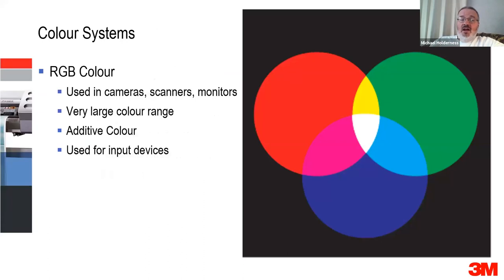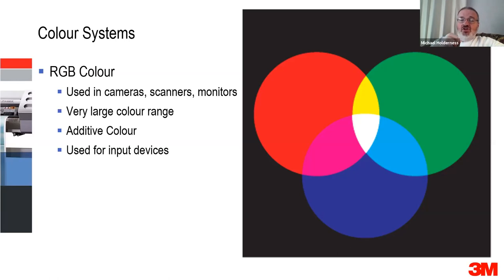First, color systems. RGB — red, green, blue — is used in cameras, scanners, and monitors. It's got a very large color range. It's what we call an additive color, so if you add red, green, and blue together, you get white. It tends to be used for input devices like cameras and scanners. A monitor is an output device, but it can also be an input device because what you're looking at on the screen can be used to input into your system. RGB has a huge color range and creates white by adding itself together.